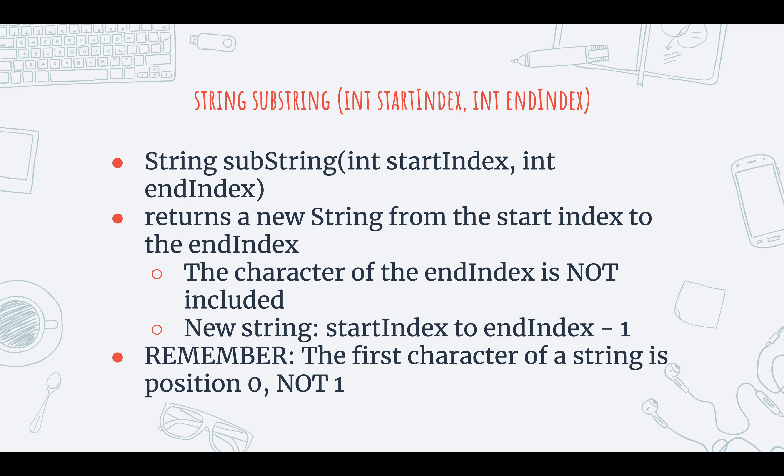Another version of the substring method takes two arguments and returns a new string from the start index to the end index. The first argument is the start index, and the end index is where you want to end. It's very important to note that the character at the end index is not included. So technically speaking, the new string will be from the start index all the way to end index minus one, inclusive of end index minus one. And another reminder: the first character of a string is position zero, not one.